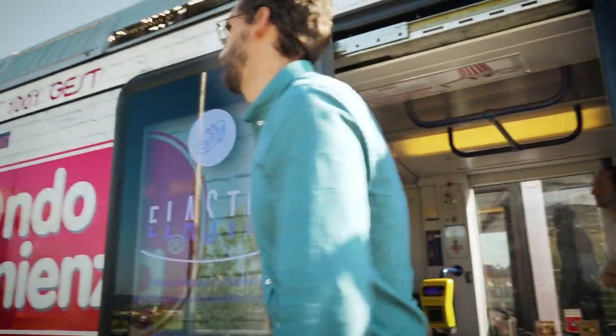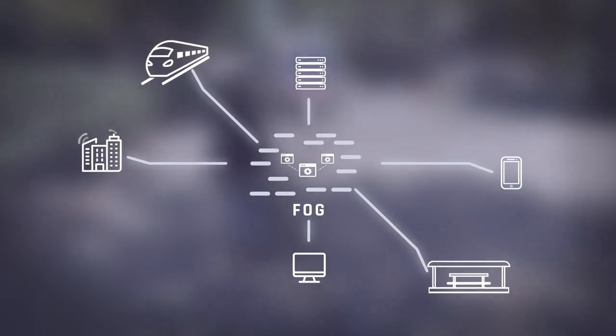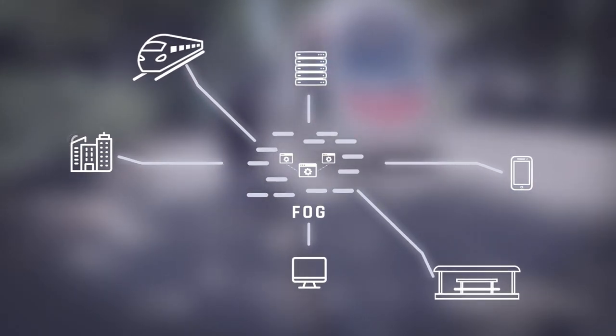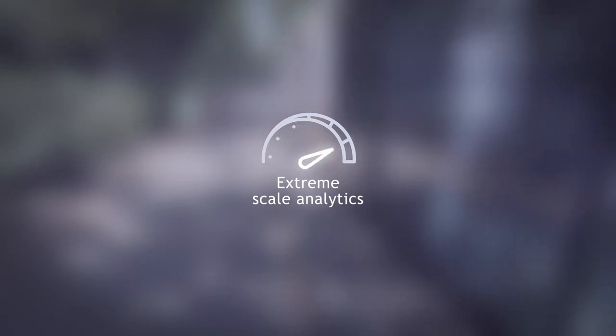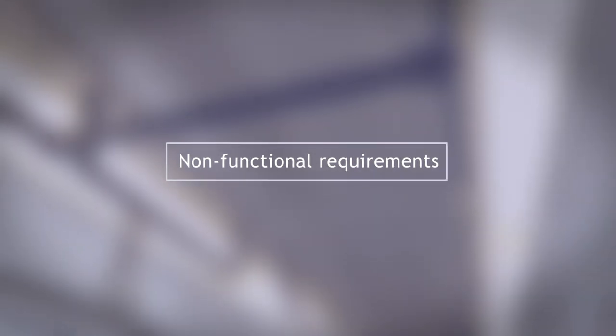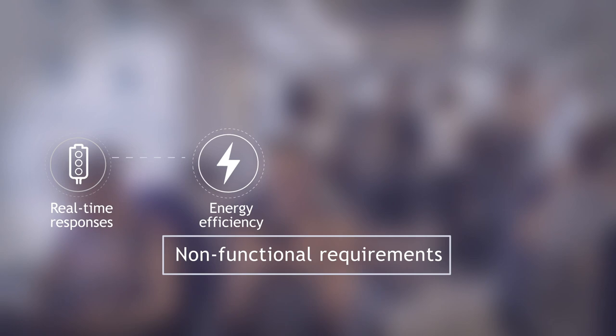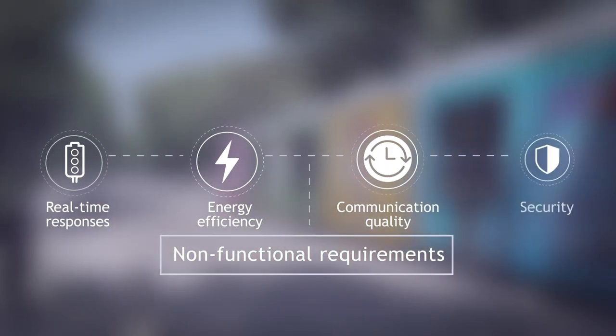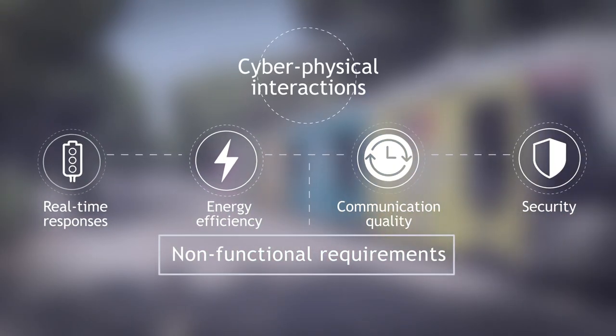The Elastic project has two main objectives. The first objective is the development of a novel software architecture with enhanced distribution capabilities targeting fog computing environments with edge and cloud computing resources. The Elastic software architecture will provide the levels of performance needed by extreme scale analytics and will fulfill important non-functional requirements in smart cities such as real-time responses, energy efficiency, communication quality, and security inherited due to the cyber-physical interactions.